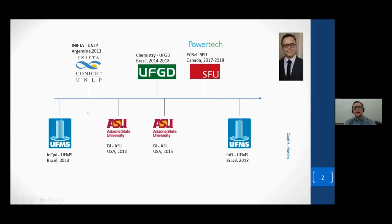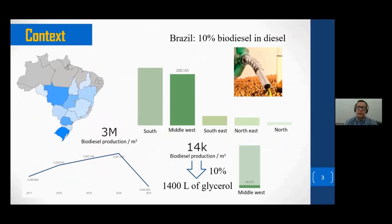About the topic, the main idea is that glycerol comes from biodiesel. So 10% of the whole biodiesel production is glycerol. In the context of my country, Brazil, we have this increasing production of biodiesel because we use 10% right now in a mixture with diesel in our vehicles. From 2020 to 2021, it dropped a little bit because of the pandemic, but right now it's increasing again.